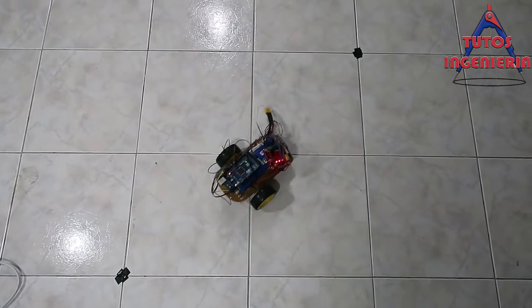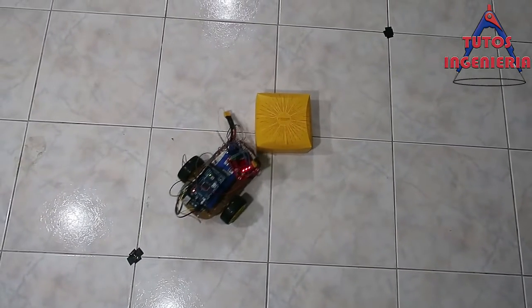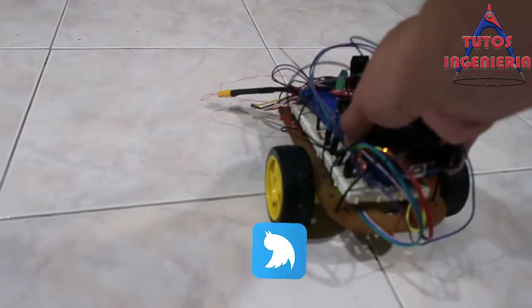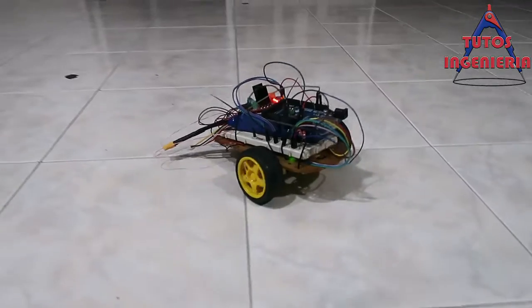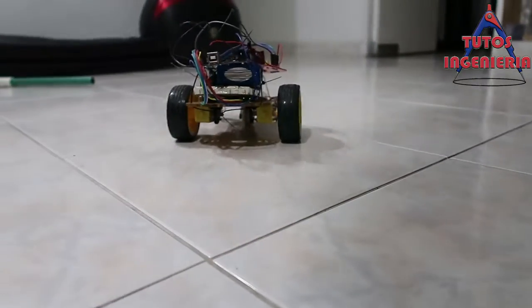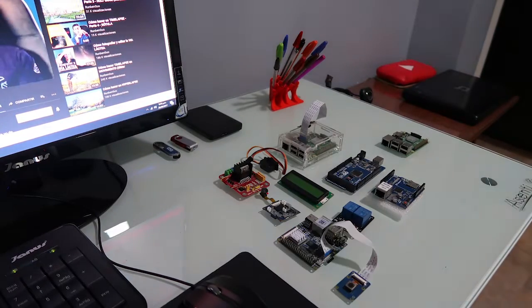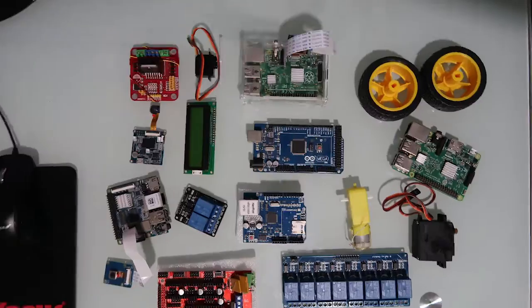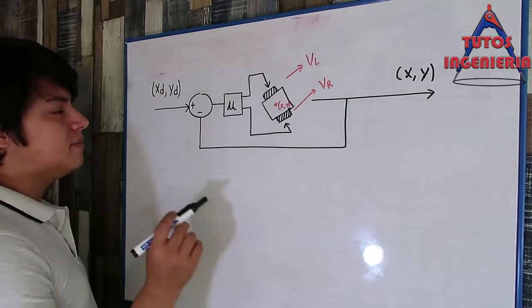Hi everybody. In this video we are going to talk in detail about the plant — how we are going to measure the position of the car, and the necessity of a mathematical model that describes the relation between inputs and outputs of our car.